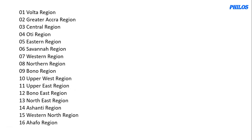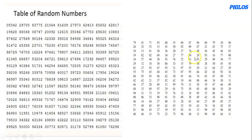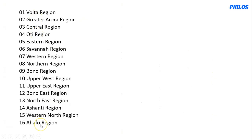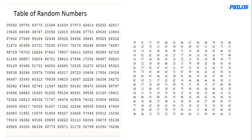Another way of performing simple random sampling is by using a table of random numbers. To use the table, you number your population — I have a population of 16, so I number them from 1 to 16. The highest is a two-digit number, so I make all single digits also two digits: 1 becomes 01, 2 becomes 02, and so on. If your population goes up to three digits, like 750, you'd use 001, 002, 003, and so on.